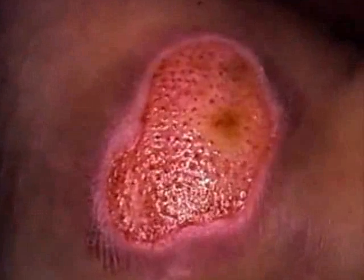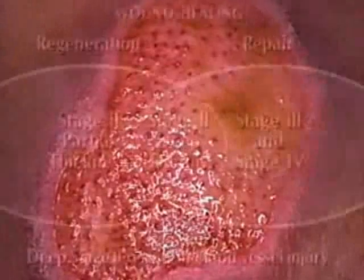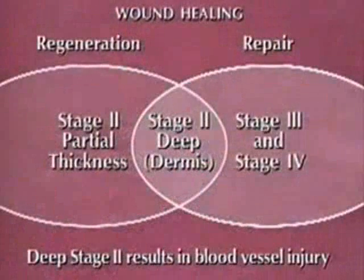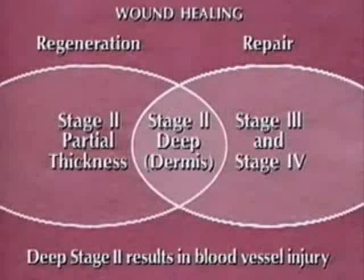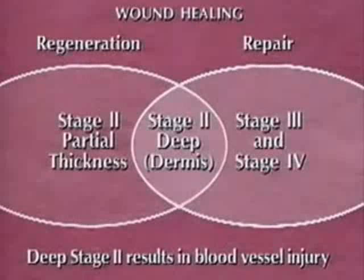Be aware that a deep stage 2 ulcer will epithelialize like a superficial ulcer because they're both partial thickness ulcers, and the deep ulcer will granulate like a full thickness ulcer because it affects the dermis. It undergoes both types of healing — tissue regeneration and tissue repair — because unlike the epidermis, the dermis is vascular. When blood vessels are injured, connective tissue is synthesized, producing granulation tissue. This does not happen in a superficial stage 2 ulcer.